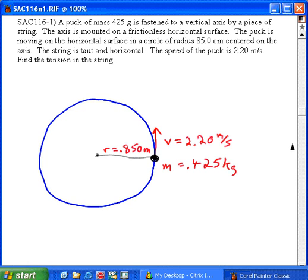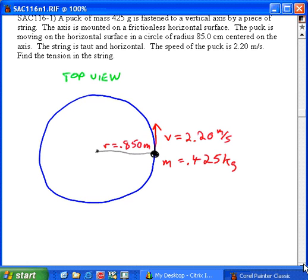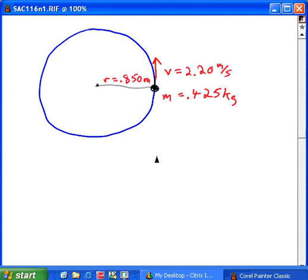And of course we're supposed to find the tension in the string. This is a top view. I want to look at an edge-on view. In fact, we'll view it from right here and draw a free body diagram of the puck from that point of view. So we're looking at it from behind, essentially, and we're at puck level looking at it.